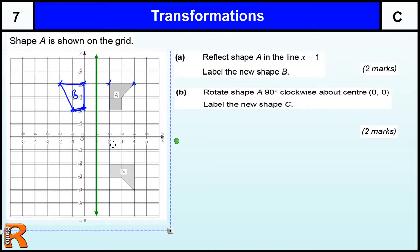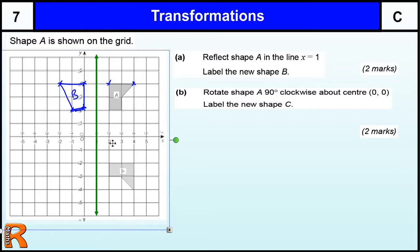Now I would recommend you use tracing paper if you're not very good at spotting these positions. And there's our new shape and we need to draw that in and label it C.